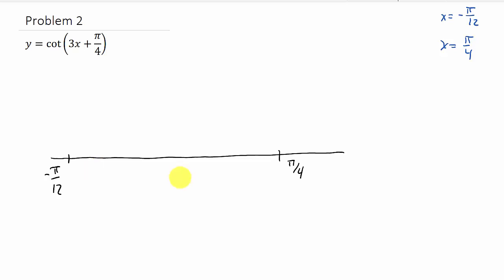Alright, so let's go ahead and let's find the midpoint between these two. Alright, so I'll show all the work. So I've got negative π over 12 plus π over 4, which that's negative π over 12, plus 3π over 12, which that's going to be 2π over 12, which is π over 6.